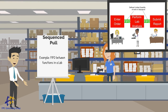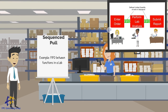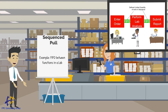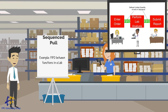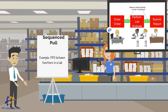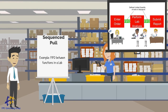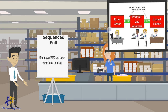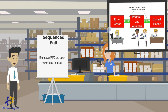If a FIFO lane is full, this is a visual signal to stop feeding it. Perhaps in this case it may be used to move resources around, such that more people begin working on the lab analysis portion to reduce the queue in the FIFO. As this reduces to a certain predetermined level, we move the resources back to continue entering orders.